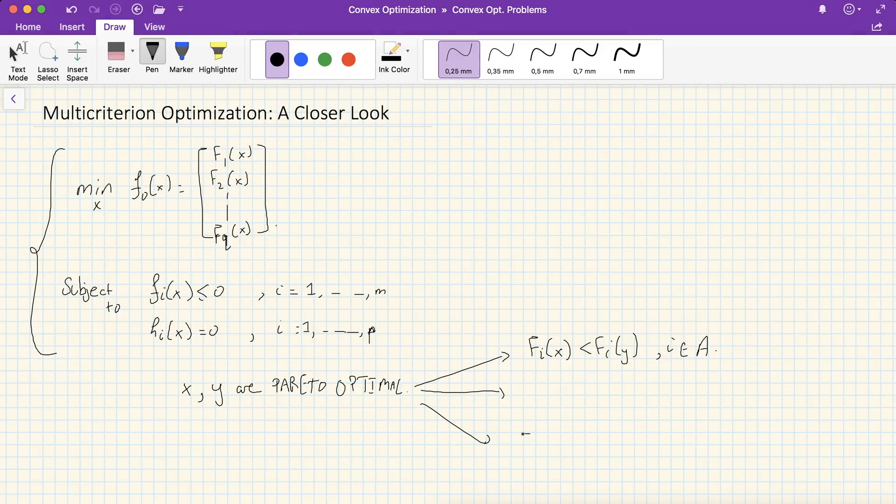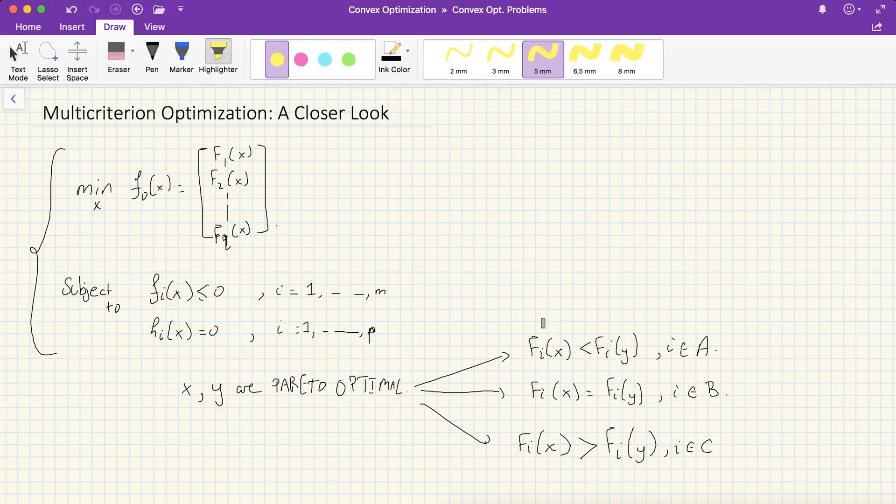Of course, A and C are non-overlapping. They don't have common indices or elements. And imagine the equilibrium case where x and y tie or are as good as each other. So over here, x beats y in A. Over here, y beats x in C.